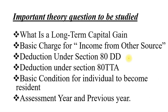Next: what are the basic conditions for an individual to become a resident — residential status — what are the two conditions; also learn the additional conditions to become an ordinary resident and not-ordinarily resident. Lastly, what is assessment year and previous year. One more thing to add: learn the various types of persons — the right types of persons — which has not been included in the list but is very important from the exam point of view.